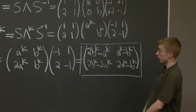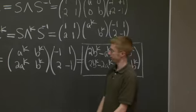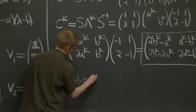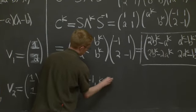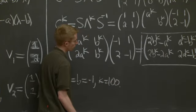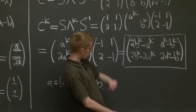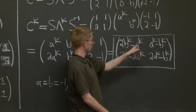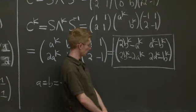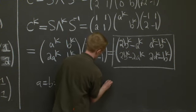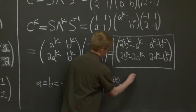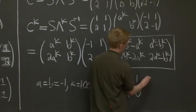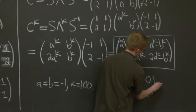Let's do a particular example. So let's plug in A and B are minus 1. So A equals B equals minus 1, and K equals 100. Then what do we get? Well, minus 1 to the 100th is just 1. So we're just plugging in 1 for B to the K and A to the K everywhere. And we just get, in this case, C to the 100th is just, well, 1, 0, 0, 1. It's just the identity matrix.